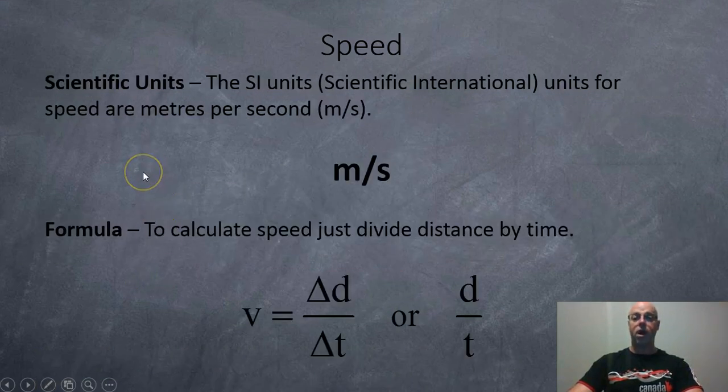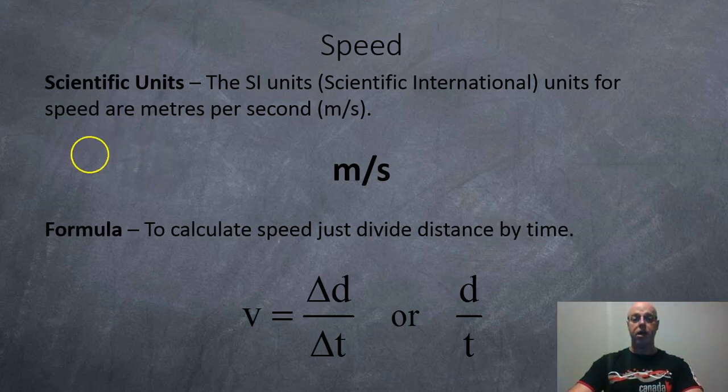The scientific units or the scientific international units for speed are meters per second. And as you can see, it's meters divided by seconds. So that hints at what the formula would be. Speed is your distance in meters divided by time in seconds. Usually, traditionally, it's written as delta D over delta T. Or if you prefer to omit the delta signs, that's fine by me.